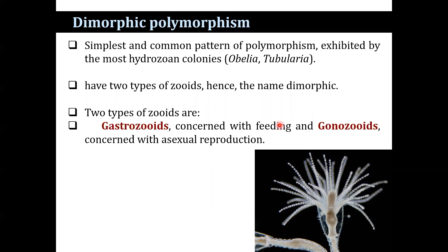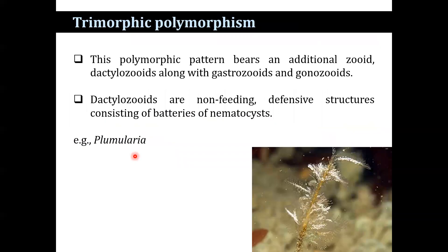One type of zooid is the gastrozooid, concerned with feeding, and another is the gonozooid, concerned with asexual reproduction. In a trimorphic colony there are gastrozooids, gonozooids, and an additional zooid — dactylozooids — added, making it trimorphic. Dactylozooids are non-feeding defensive structures consisting of batteries of nematocysts, and are found in Plumularia.